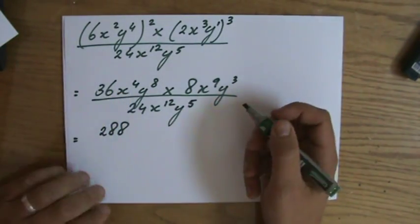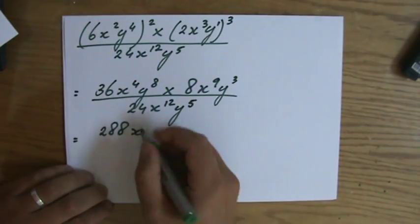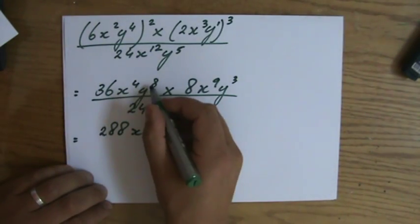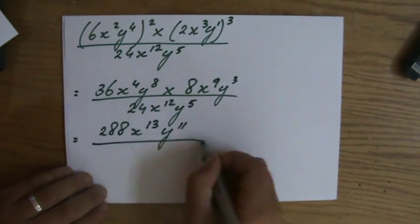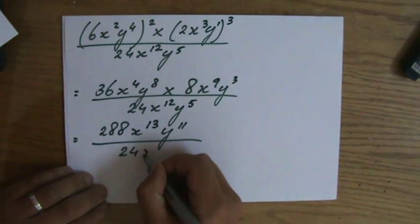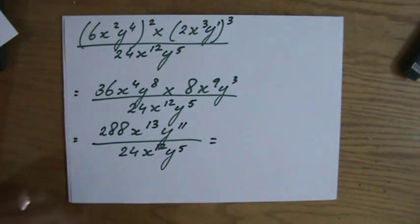X to the power of 4 times x to the power of 9. That is x to the power of 4 plus 9. So 13. Y to the power of 8 times y to the power of 3 is y to the power of 11. All of that divided by 24, x to the power of 12, y to the power of 5.